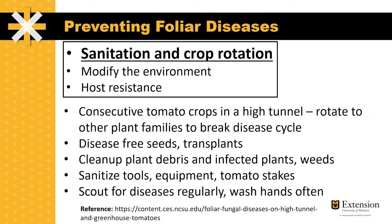Although tomatoes have proven to be the most profitable crop for high tunnels, there is research into alternative rotations that include strawberries, vine crops, as well as sweet potato slip production. It's important to start with disease-free seeds and transplants and make sure you're sourcing these from a reputable supplier. You want to clean up any plant debris, as well as rogue infected plants and weeds, as weeds may act as a reservoir for plant disease. It's important to sanitize your tools, equipment, and things like tomato stakes, and also scout for diseases regularly and make sure that you and your employees are washing hands often.